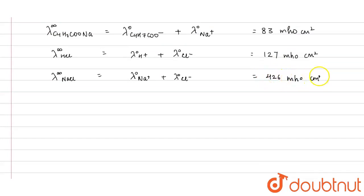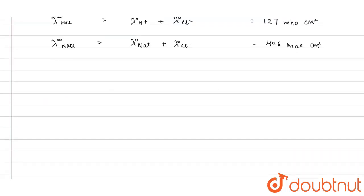We need to find out the butyric acid lambda. We need to find lambda infinity of C4H7COOH. This is your butyric acid and it can be written as lambda naught of C4H7COO minus...